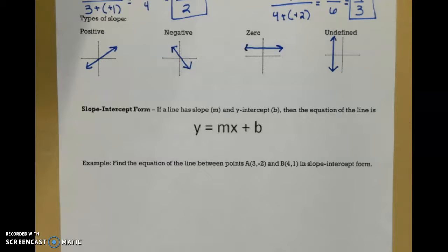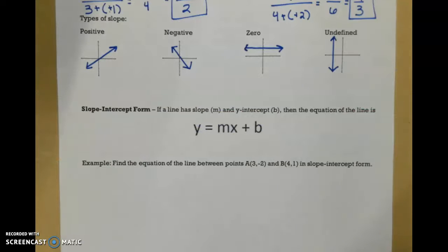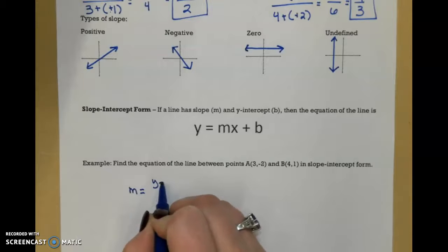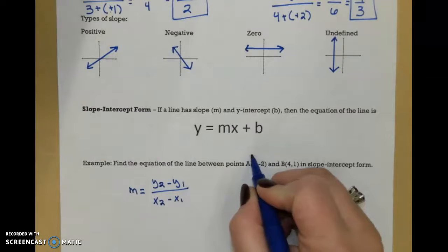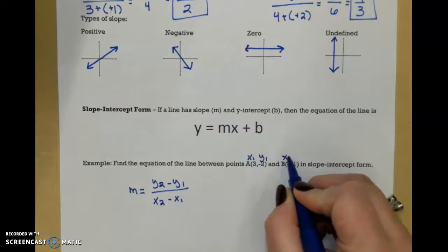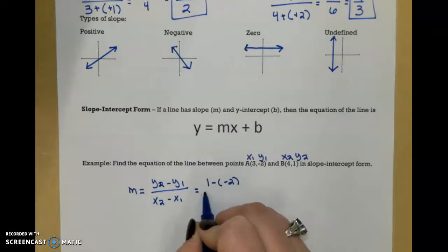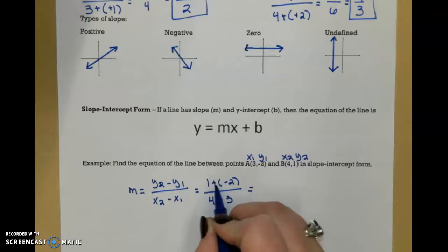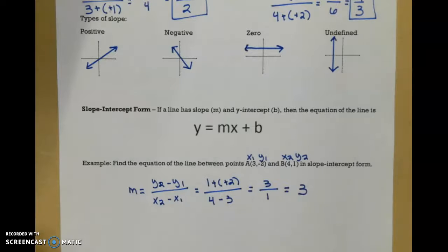So let's look at this example together. I want to find the equation of the line of point A at 3, negative 2, and point B at 4, 1, in slope-intercept form. I first want to find my slope — that's y2 minus y1 over x2 minus x1. So I can label my points to make it easier to plug in. So 1 minus negative 2 over 4 minus 3. Minus minus becomes plus plus, so I get 3 over 1, which is just 3. So that's my slope.